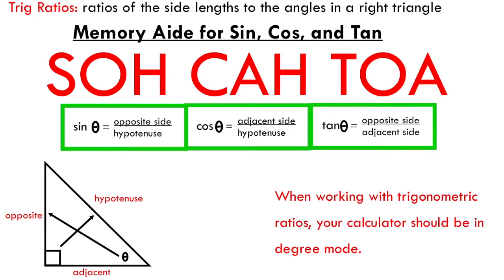Just a quick recap in case you're new to the primary trigonometric ratios. We have three ratios that relate side lengths to angles in a right triangle: sine, cosine, and tangent. There's a memory aid — SOHCAHTOA — which tells us each side length that pertains to either sine, cos, or tan. Sine is opposite over hypotenuse (SOH), cosine is adjacent over hypotenuse (CAH), and tangent is opposite over adjacent (TOA).